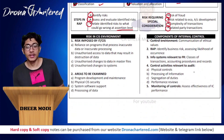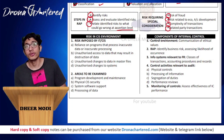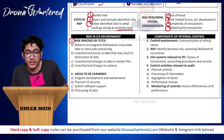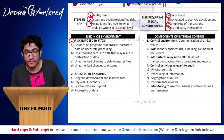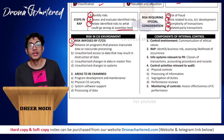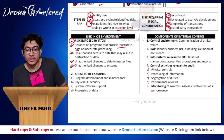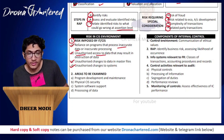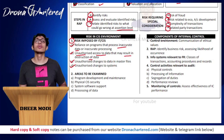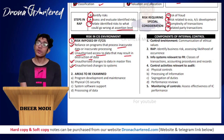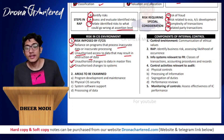Risk in a CIS environment means risk while auditing in an automated or IT environment. CIS stands for computer information system. The first risk is reliance on programs that process inaccurate data or perform inaccurate processing - the applications you are using are processing inaccurate data. The second risk is unauthorized access to data that may result in destruction of data - if a person who should not have authorization makes changes or deletes data, you might lose all of it.